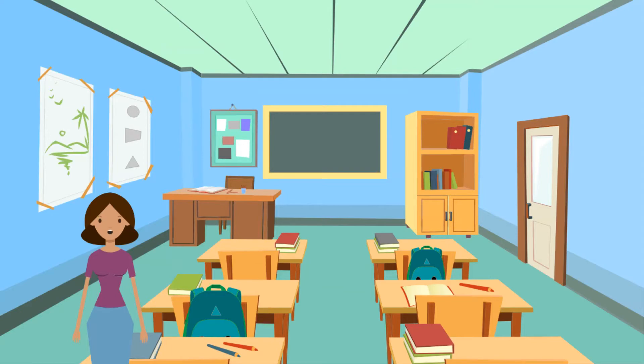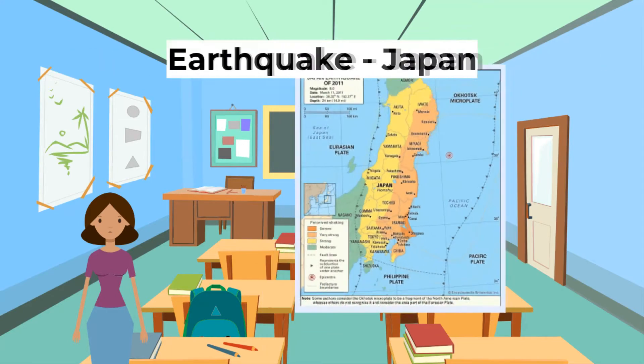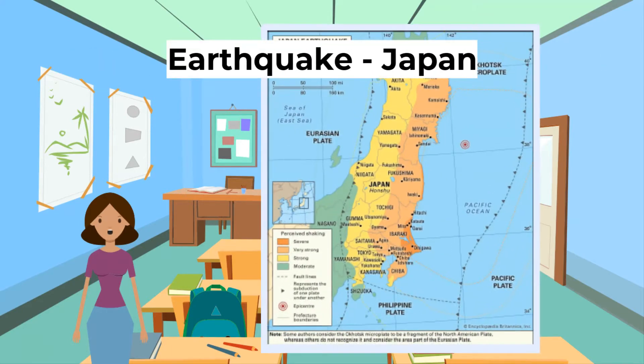Today on our Hazardous Earth, we will be looking at earthquakes in Japan and Nepal. Firstly, an earthquake in a developed country: Tohoku, Japan, in 2011.